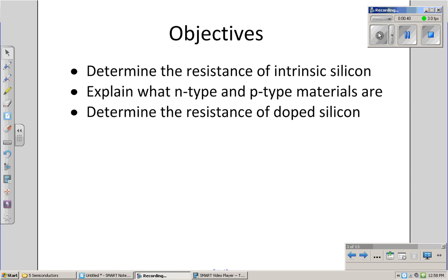The objective here is to talk about what is the resistance of intrinsic silicon. That's pure silicon without any impurities. Explain what the different types of materials are. As I add impurities, such as phosphorus or boron, I can create very different types of materials called n-type and p-type. And then we'd like to determine the resistance of some doped silicon.